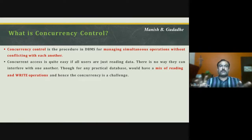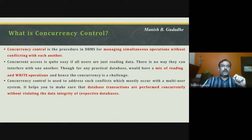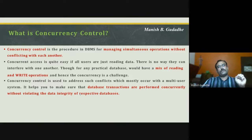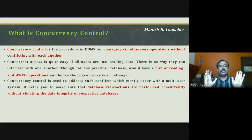The concurrency control is used to address such conflicts, which mostly occur with multi-user systems. It helps make sure that database transactions are performed concurrently without violating the data integrity of the respective database. When we talk about write operations — when something is getting updated — we need to take care that it gets reflected in the whole database.